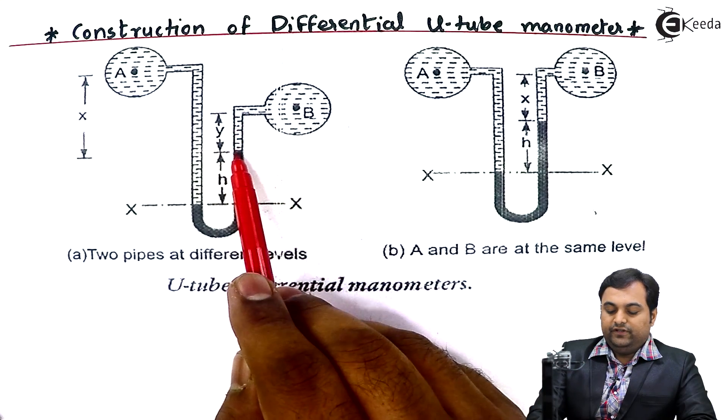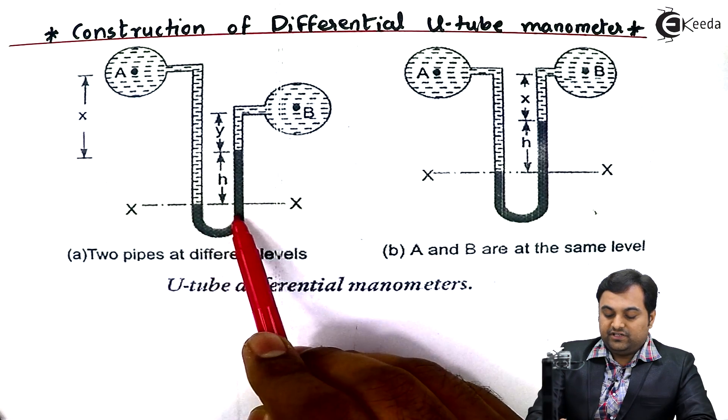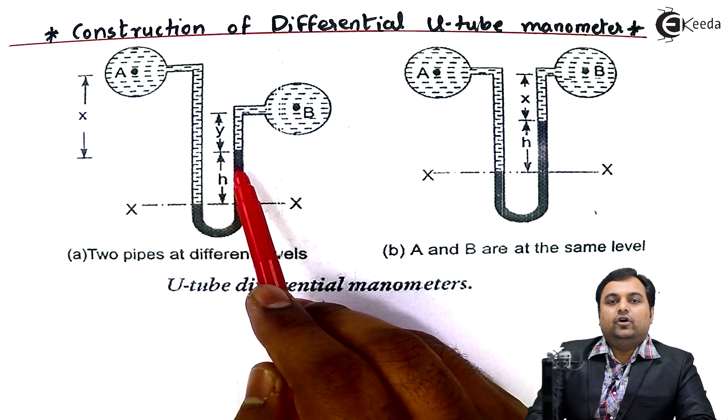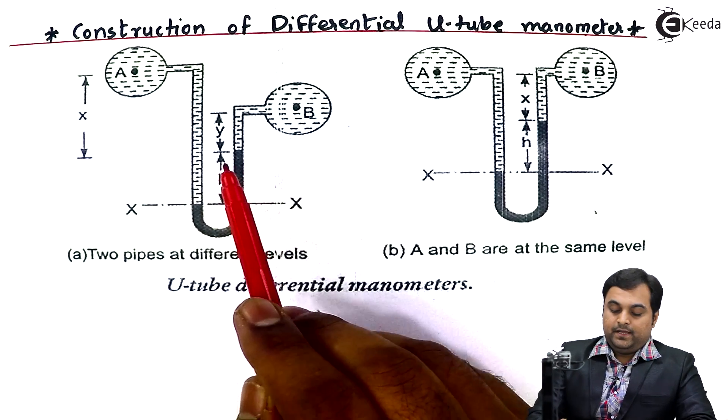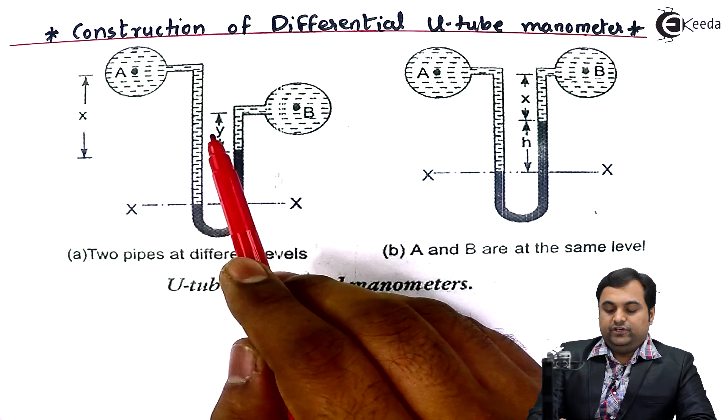Similarly, from pipe B the fluid will enter the right limb of the differential U-tube manometer. This black portion which we are seeing is mercury or heavier liquid.